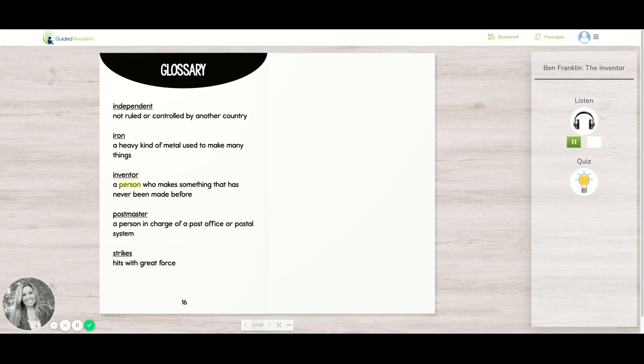Iron: A heavy kind of metal used to make many things. Inventor: A person who makes something that has never been made before. Postmaster: A person in charge of a post office or postal system. Strikes: Hits with great force.